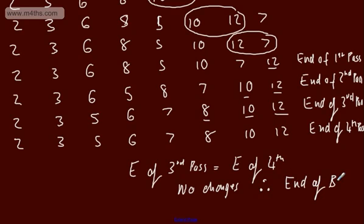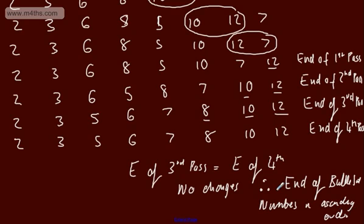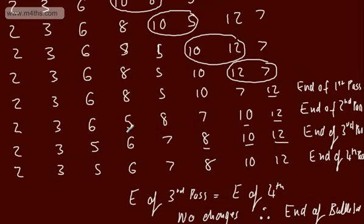We write to the examiner: numbers in ascending order. If you cut this short, you'll get one mark docked, possibly two depending on the mark scheme. This is not the end of the bubble sort — we need to show there are no changes by doing the next pass. End of third pass equals end of fourth pass, no changes, end of bubble sort. Numbers in ascending order, and we're done.